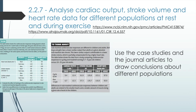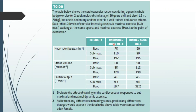Next, looking at section 2.2.7, we need to analyze cardiac output, stroke volume, and heart rate data for different populations at rest and during exercise. There are a couple of journal articles referenced here, and links will be provided in the video description for more detail.